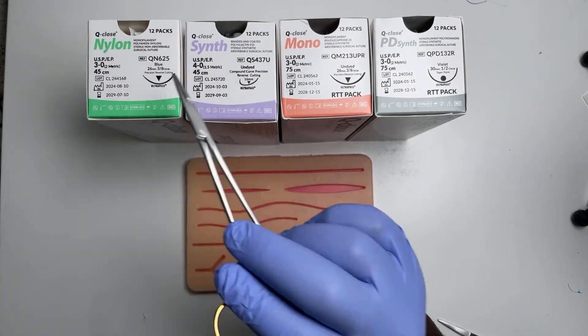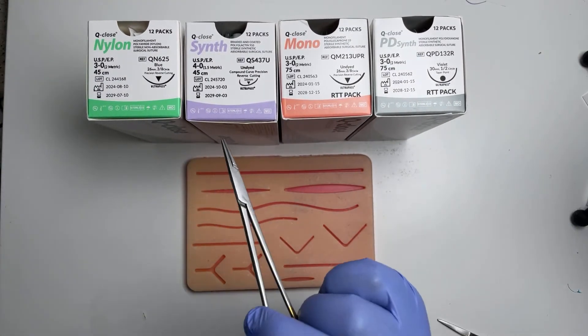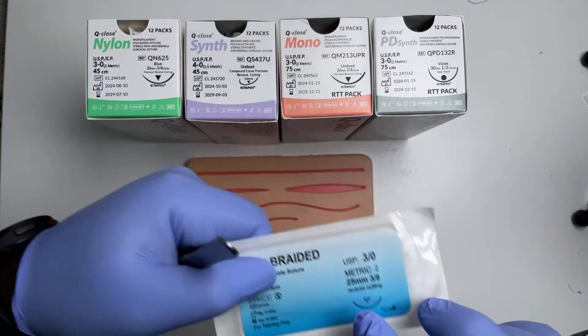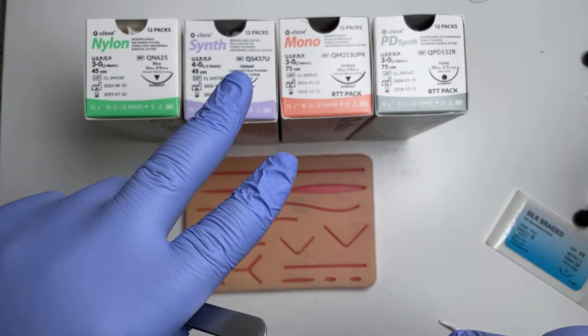You've got monofilament, braided, other braided things include silk, dissolvable, non-dissolvable.